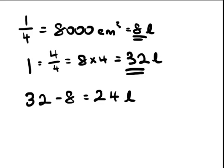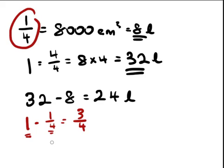Alternatively, if you already know how to do this, basically just take 1 minus 1 quarter. In other words, full tank minus 1 quarter of the tank will give you 3 quarters of the tank. So, if you know that 1 quarter gives you 8 liters, 3 quarters is going to give you 8 times 3, which gives you 24 liters. Easy peasy, lemon squeezy.